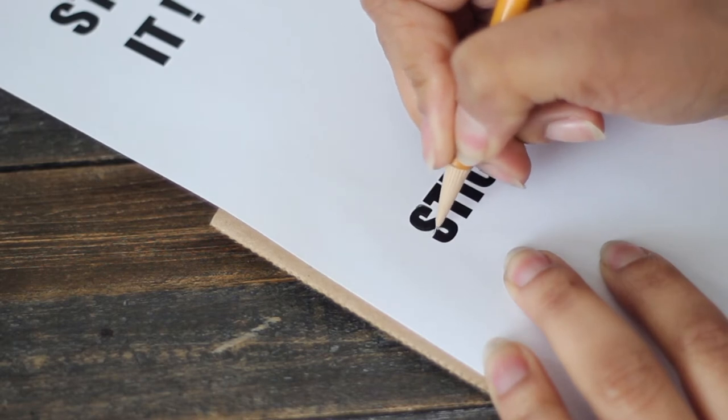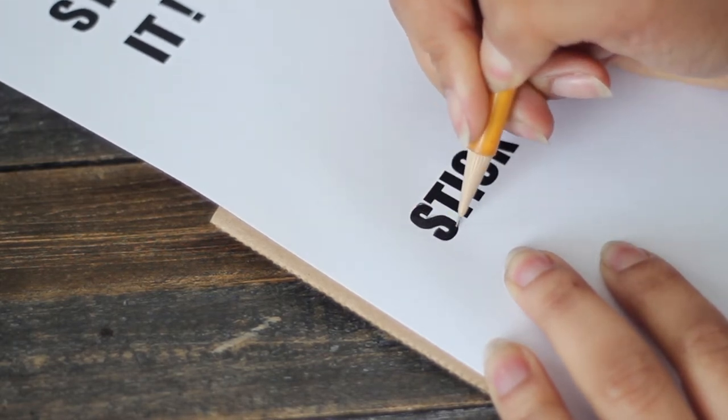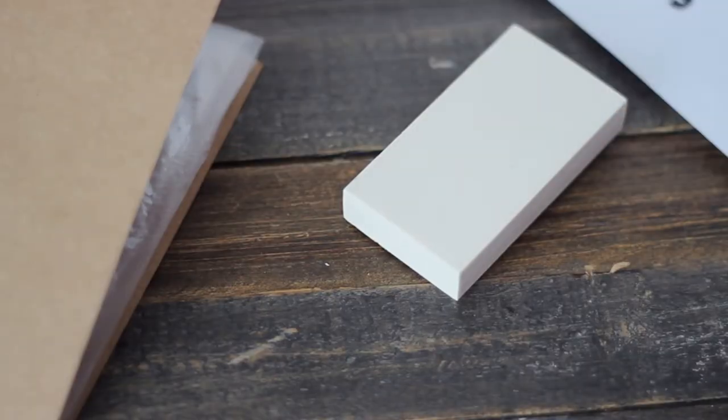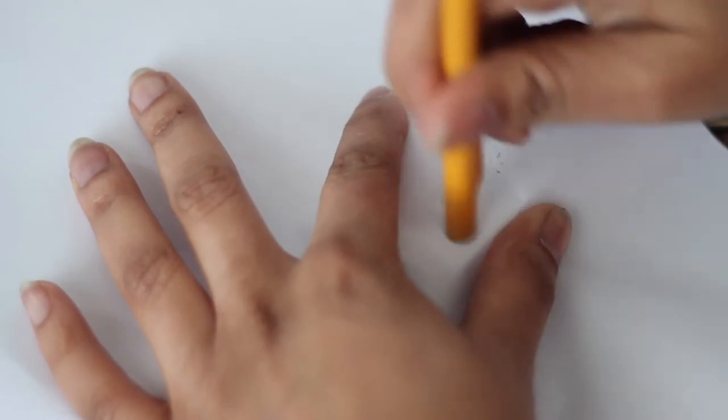You'll also need possibly a printer because you're going to want to print out whatever it is that you're making into a stamp. You're going to trace over that, then transfer it to your stamp by just burnishing it into the surface. Now this is where the skill comes in.